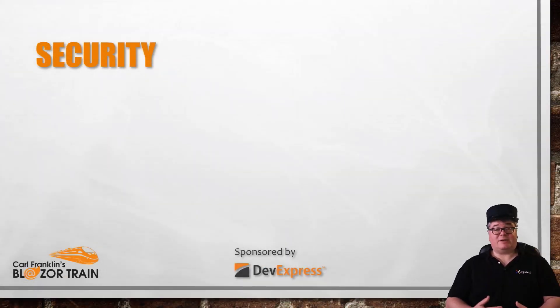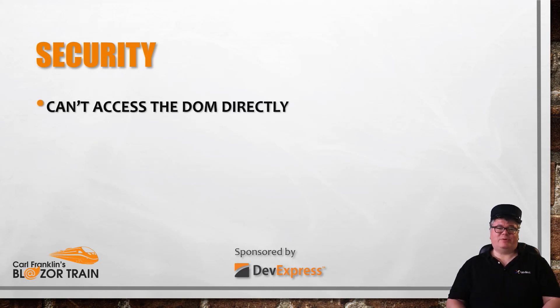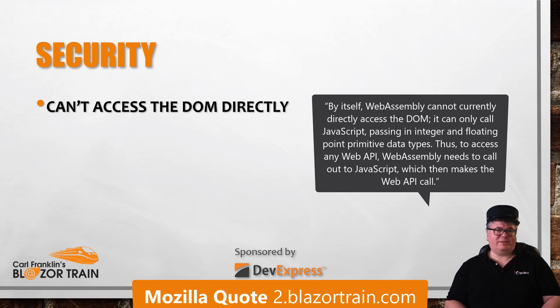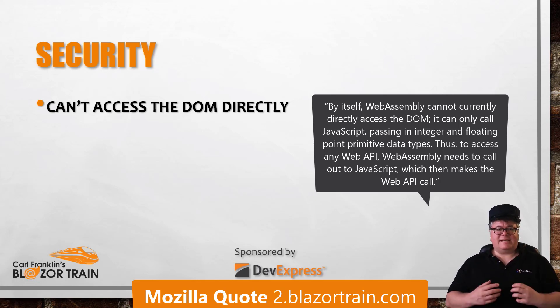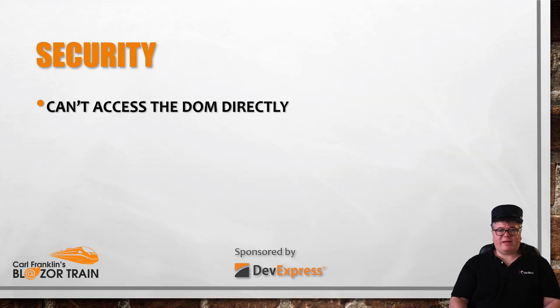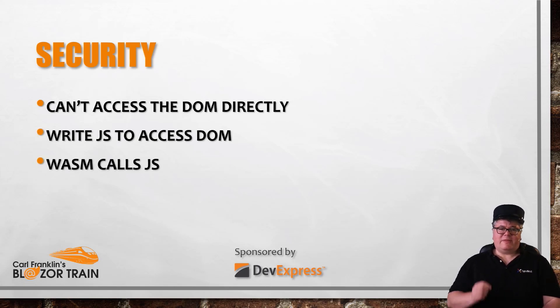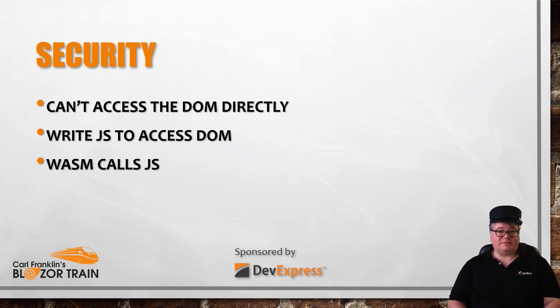Right off the bat, we need to talk about security. Code running in Wasm can't interact with the DOM directly. Here's a quote from the WebAssembly docs at Mozilla: by itself, WebAssembly cannot currently directly access the DOM. It can only call JavaScript, passing in integer and floating-point primitive data types. Thus, to access any Web API, WebAssembly needs to call out to JavaScript, which then makes the Web API call. If I was to write a Wasm app with a language like C, I couldn't just find an element on the page and modify it — I'd have to write a JavaScript function to access the DOM and then call that function from Wasm. That fundamental architectural decision means that any code compiled to Wasm can only interact with the world outside of Wasm via JavaScript. So if JavaScript can't do it, neither can Wasm. I can't stress enough how important it is to understand this basic idea.